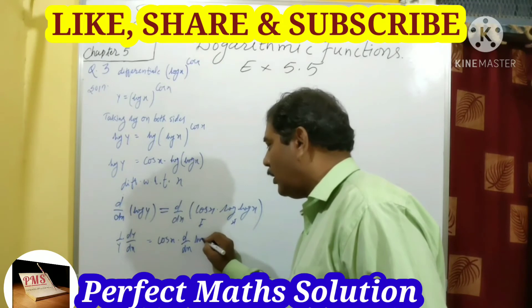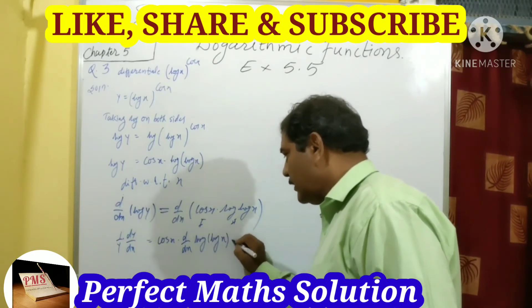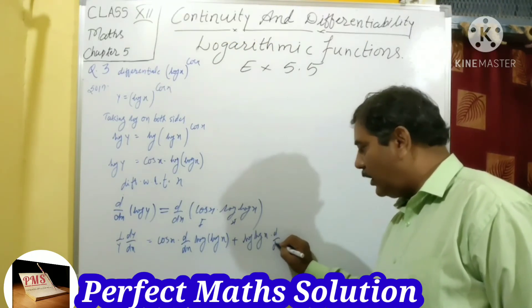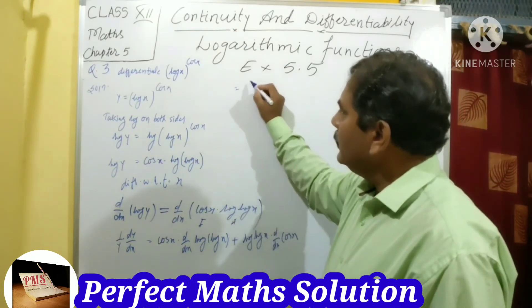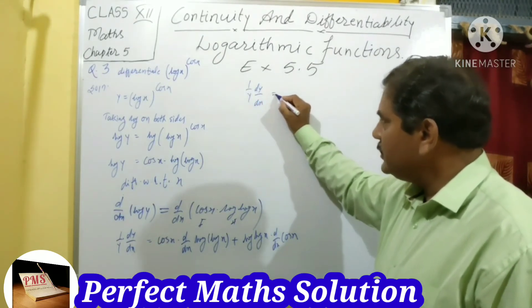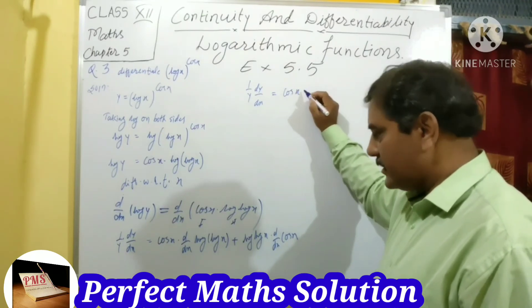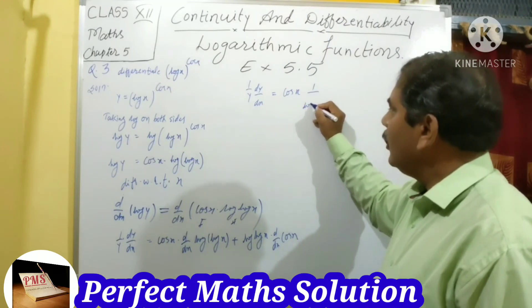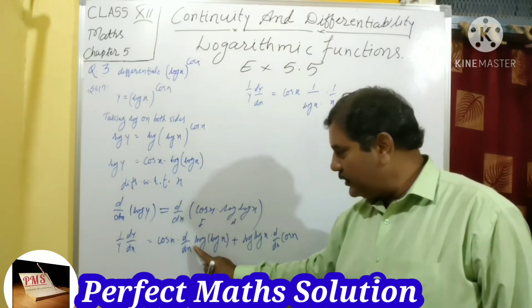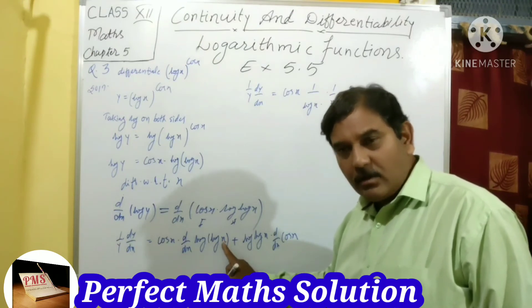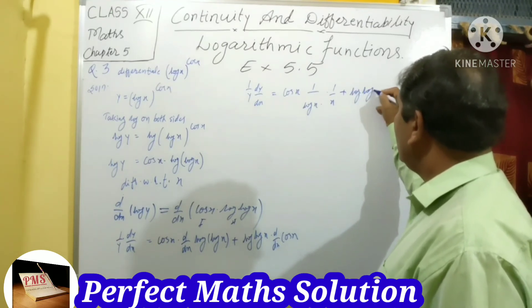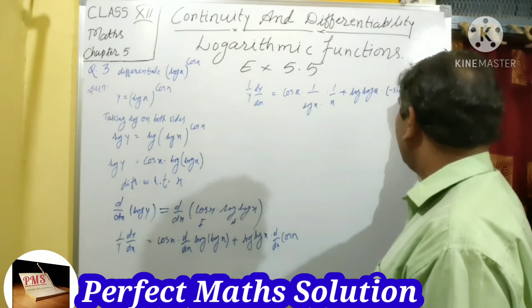Applying product rule: cos x as it is, times derivative of log(log x), plus log(log x) as it is, times derivative of cos x. The derivative of log(log x) is 1/log x · 1/x. So: 1/y · dy/dx equals cos x · (1/(x·log x)) + log(log x) · (−sin x).